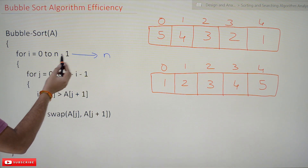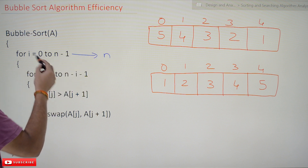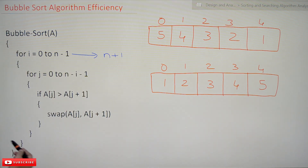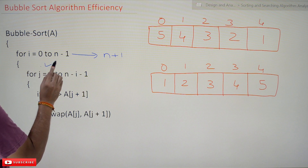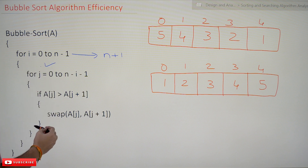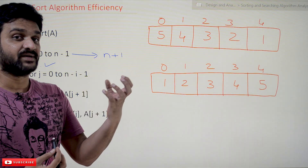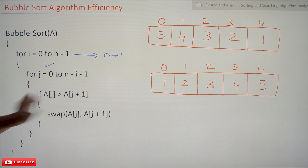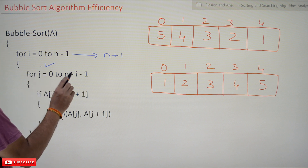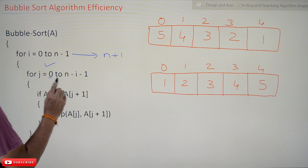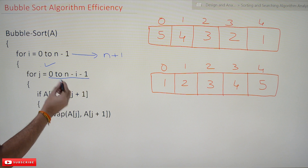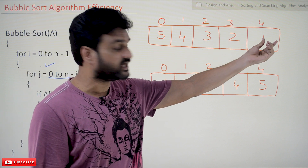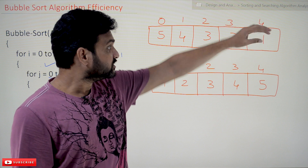The outer loop iterates from 0 to n minus 1, so all iterations are done till the end — it iterates n plus 1 times including the exit check. Analyzing the inner for loop is very important to understand the number of program steps executed. The inner loop goes from 0 to n minus i minus 1. We take n minus i minus 1 because the largest element gets swapped to the end of the array.